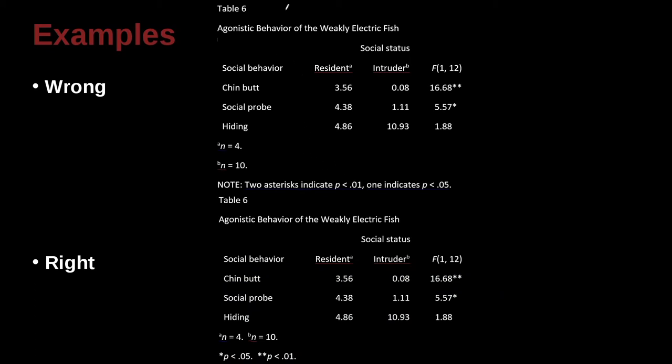Let's take a look at another example, agnostic behavior of the weakly electric fish. So some kind of fish that has electric power, right? So we have our decked example here, social status, and social status has two parts, resident and intruder. That looks very good.